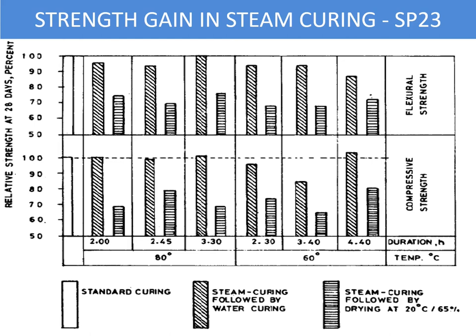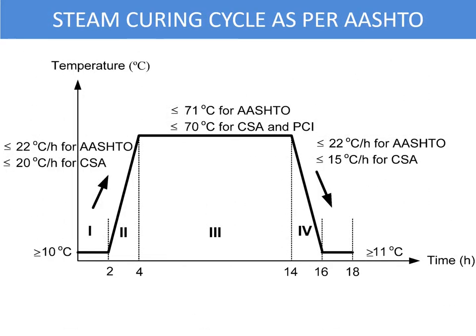In summary, steam curing alone is not sufficient to give elements their complete required long-term strength. While it provides higher early strength immediately, if not followed by water curing or other approved curing methods, the 28-day strength may be reduced by almost 40 percent compared to normal curing. Therefore, it is always recommended to follow steam curing with water curing or another approved method immediately after completing the steam curing cycle.